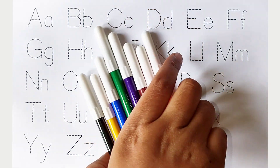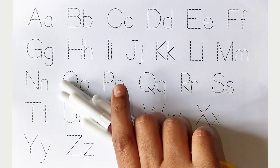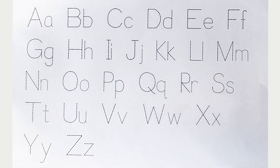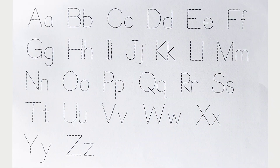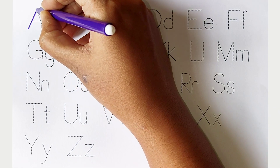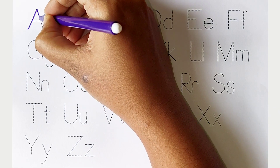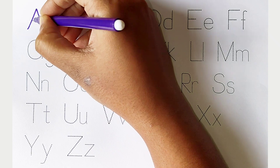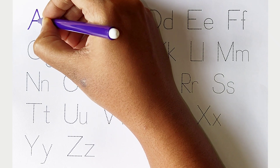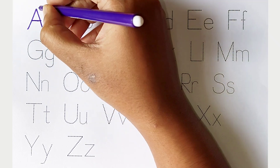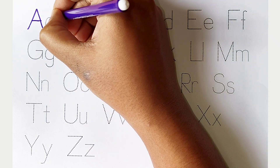Hi kids, today we can learn the alphabets in both capital and small letter forms. A. Violet color, capital A, small a.